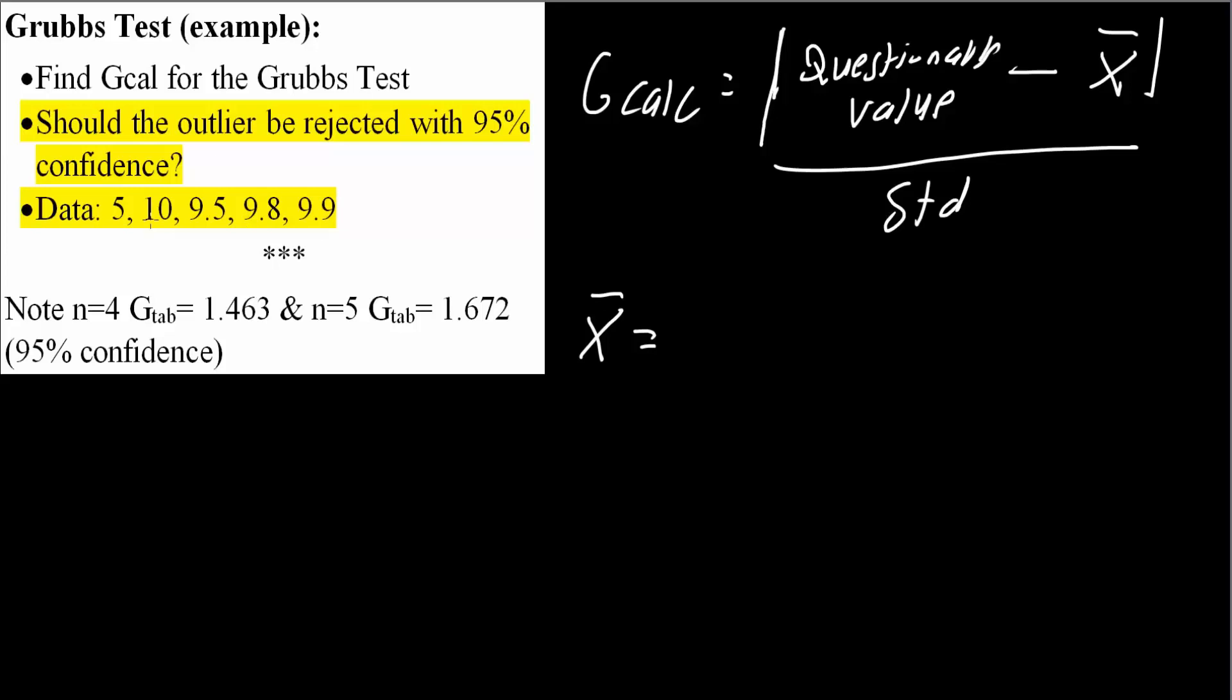We add up these numbers: 5 plus 10 plus 9.5 plus 9.8 plus 9.9, divided by 5. And we would get 8.84.